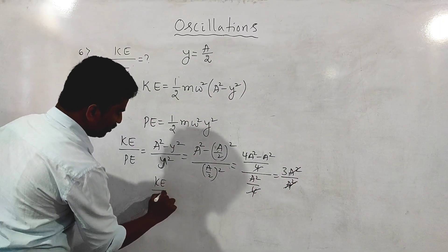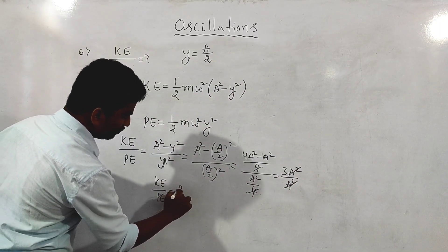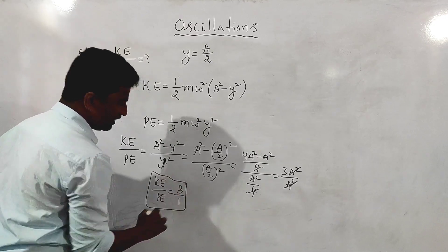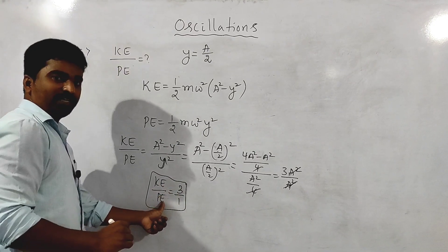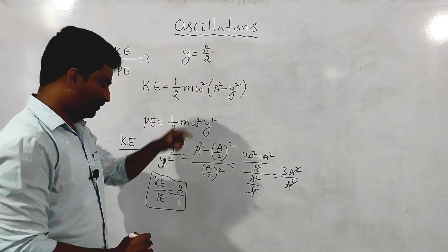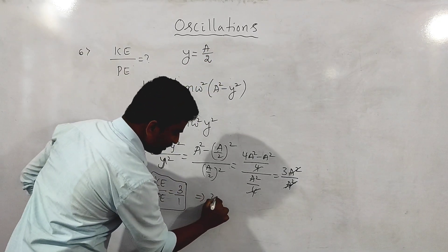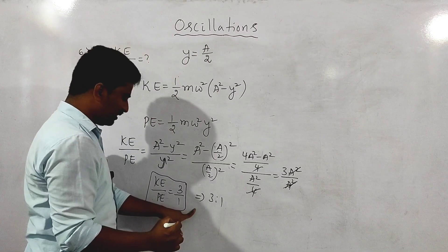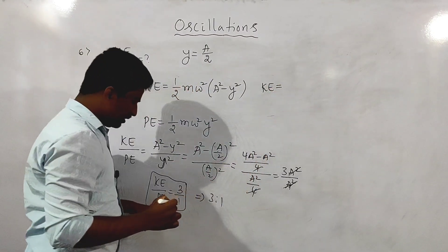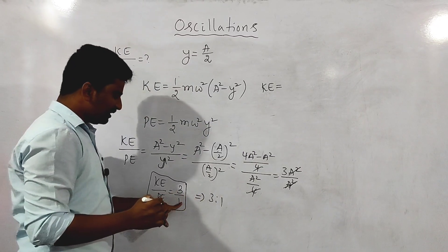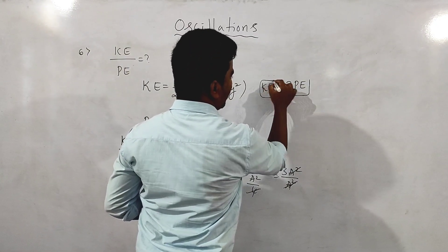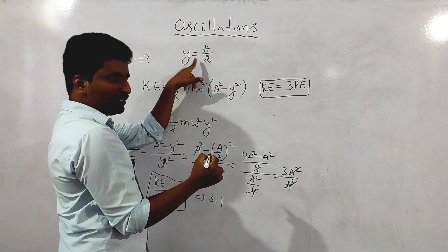So kinetic energy to potential energy is equal to 3 by 1. This is the relation between kinetic energy and potential energy at a distance equal to A/2. The answer is 3 by 1.